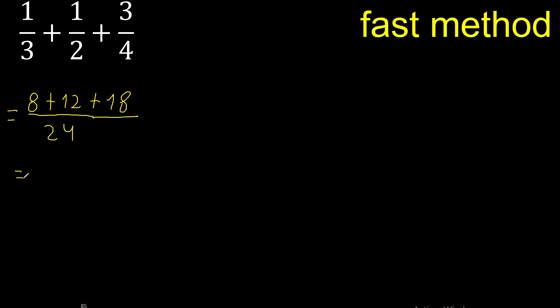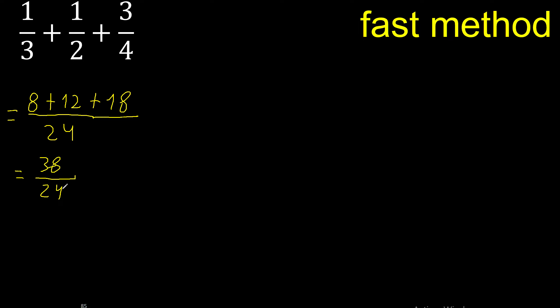This can be simplified because it can be divided by the same number — divided by 2: 24 divided by 2 is 12. This cannot be simplified because it cannot be divided by the same number.